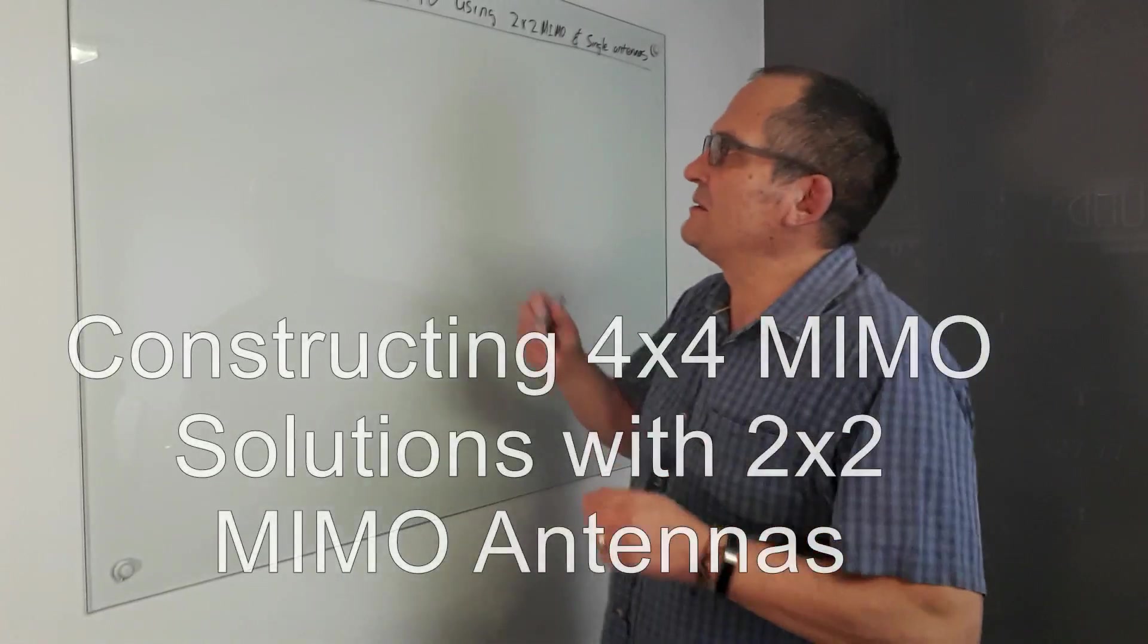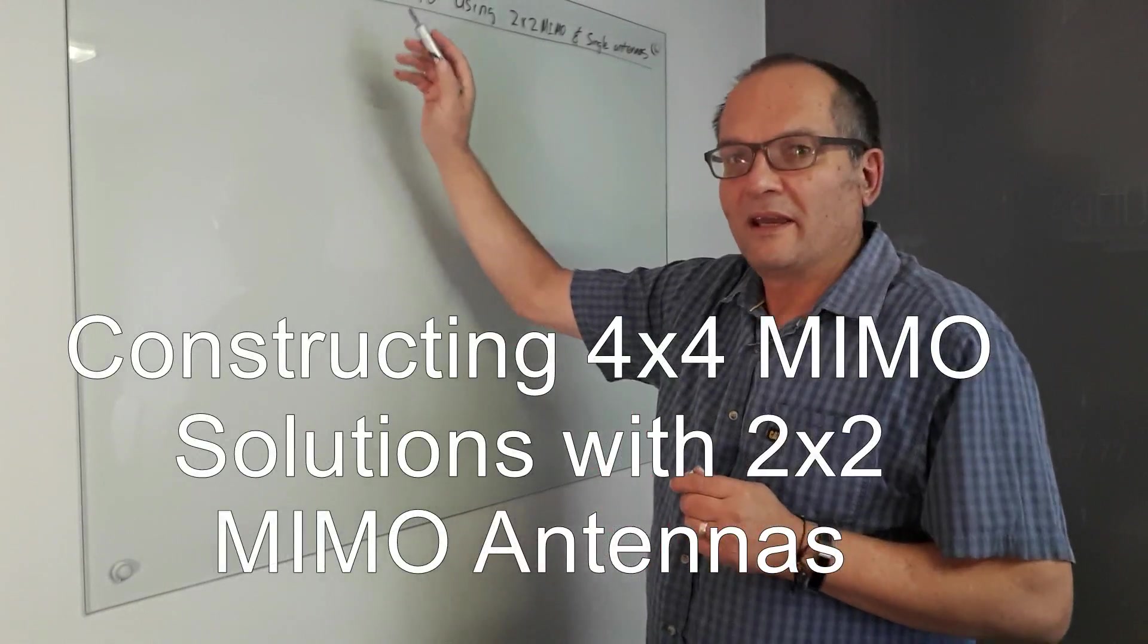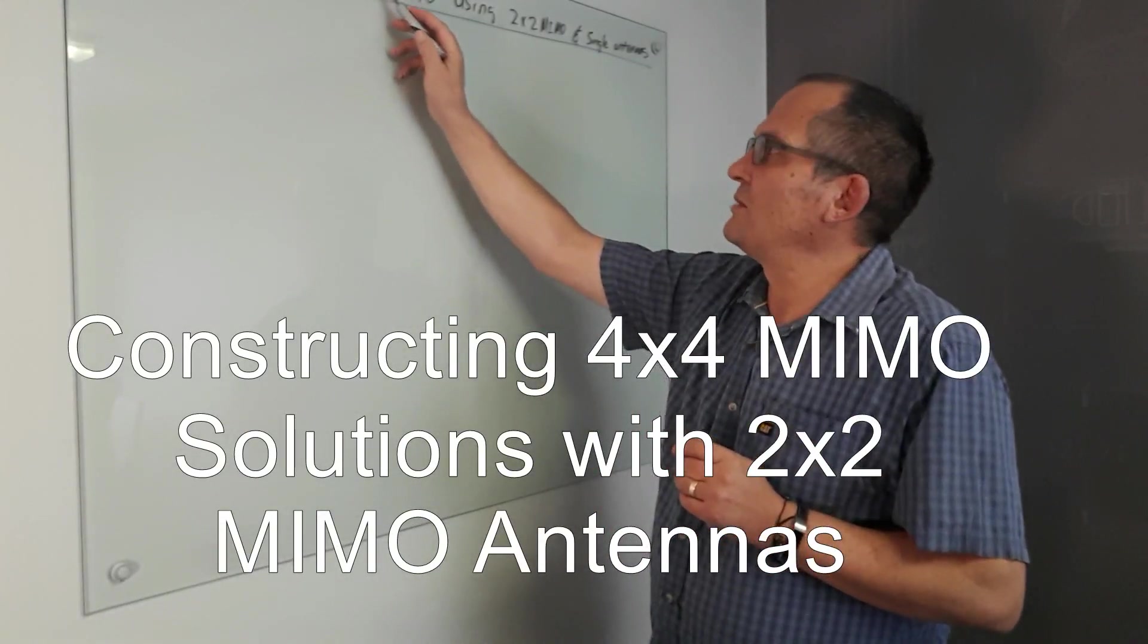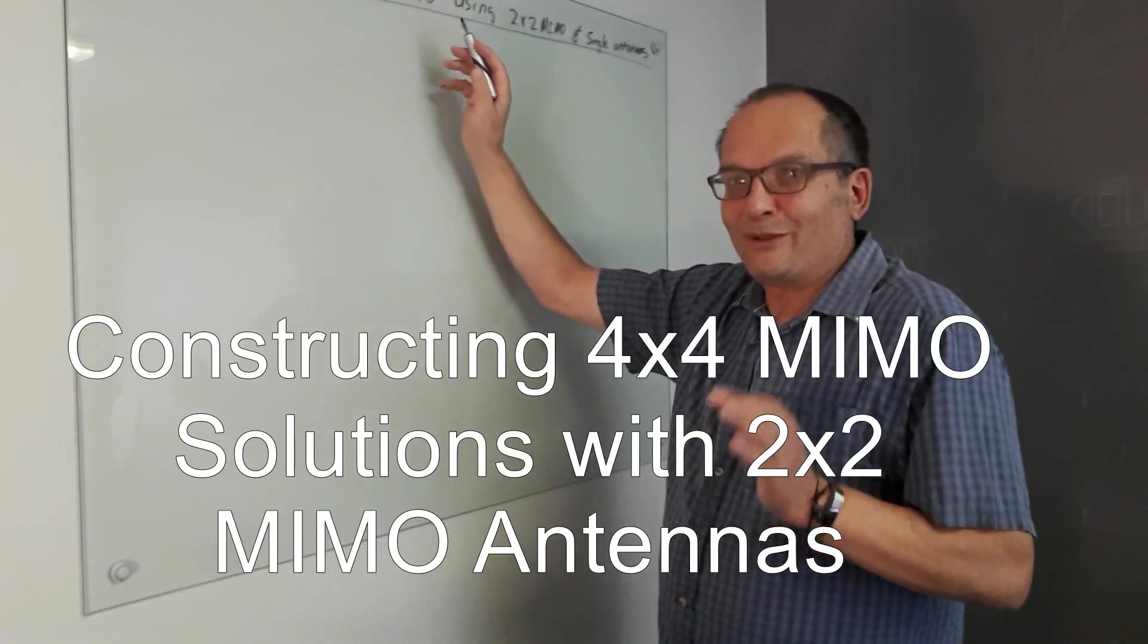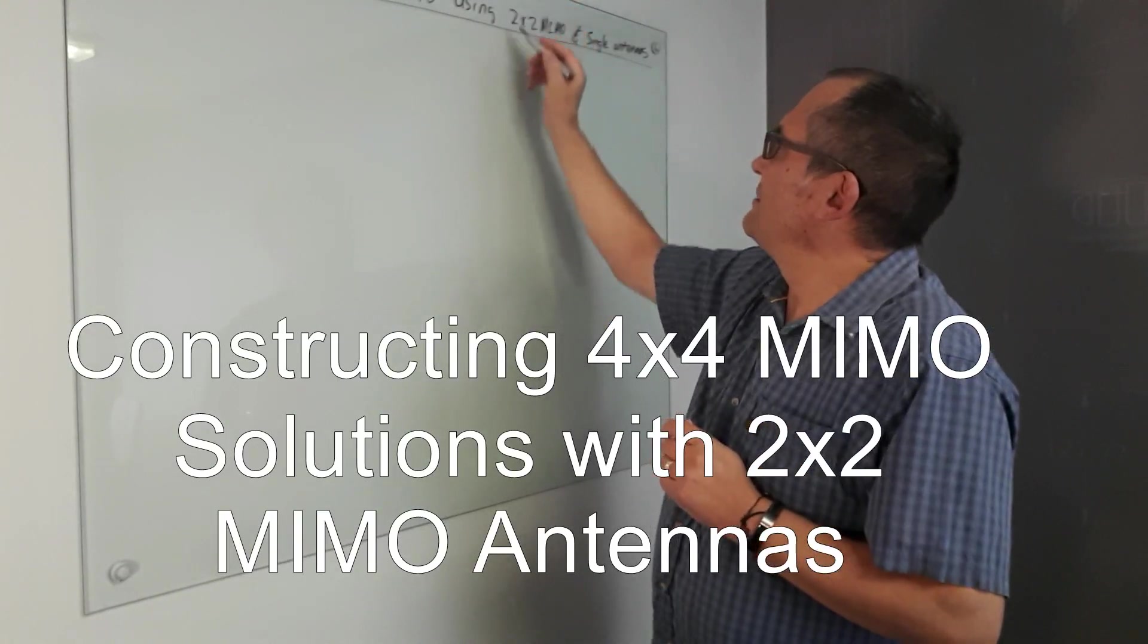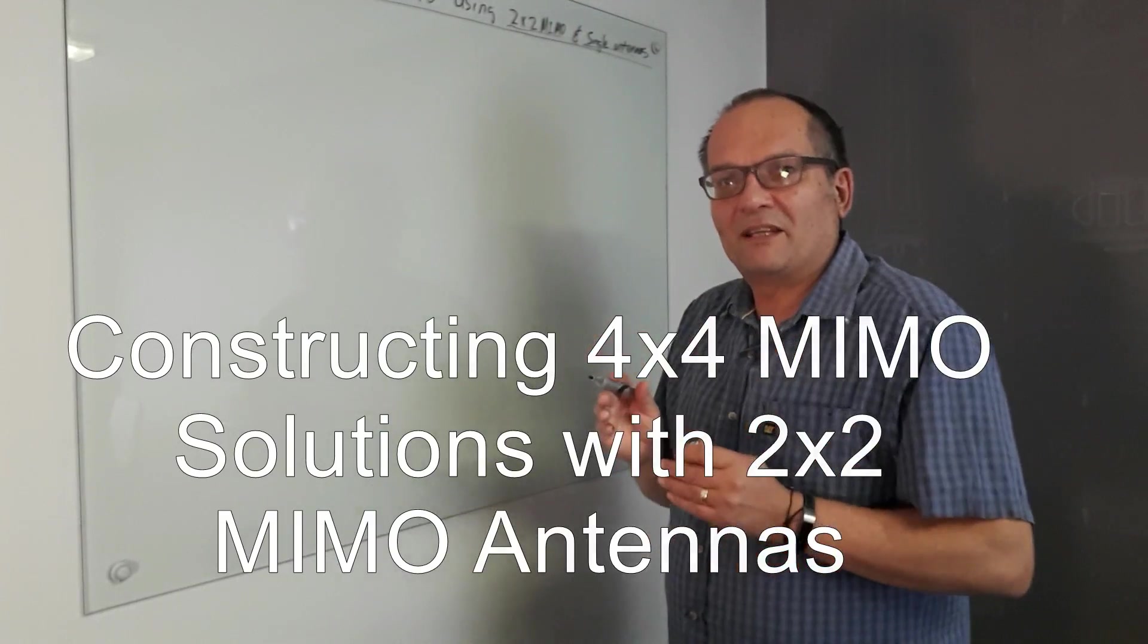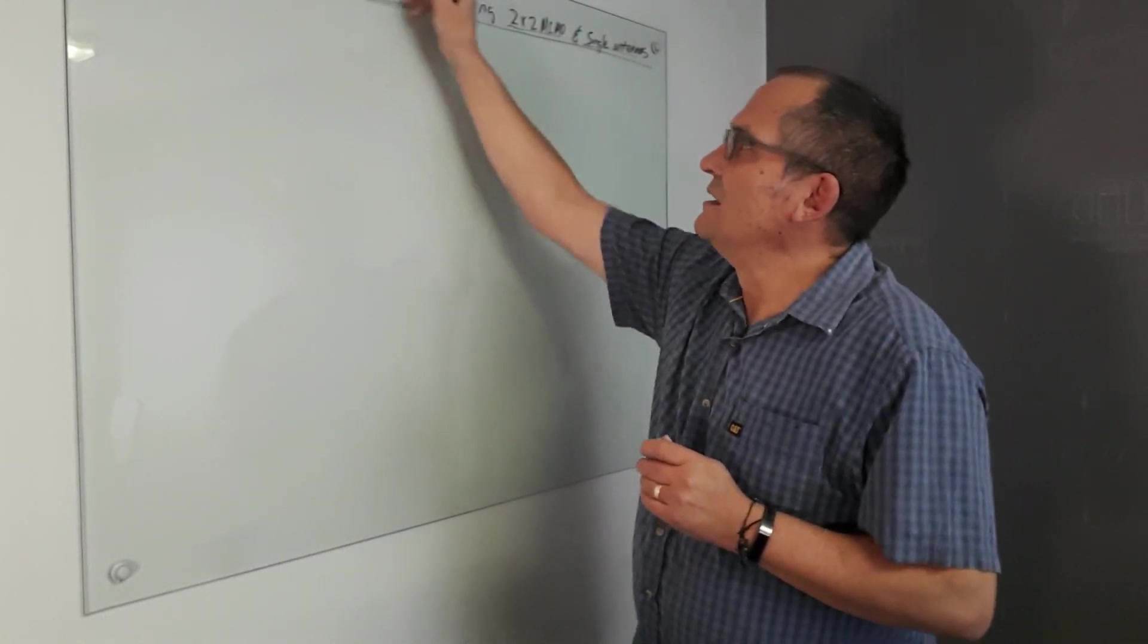We are today just going to discuss something interesting. Mostly 5G is going towards 4x4 MIMO and much more MIMO, but initially it will certainly not go much beyond 4x4. Now there's not many 4x4 MIMO antennas around. Poynting is already designing some and they will come out. But mostly at the moment available is 2x2 MIMO and single antennas. I just want to give some indications how one could construct 4x4 MIMO solutions for 5G.